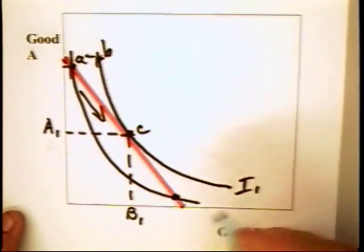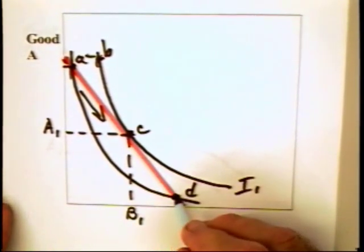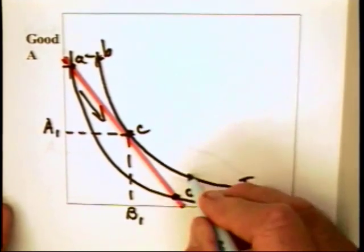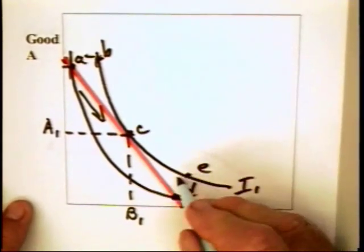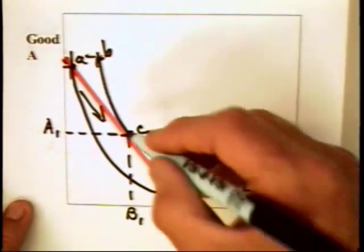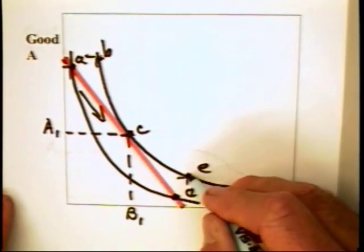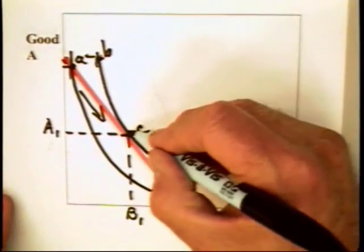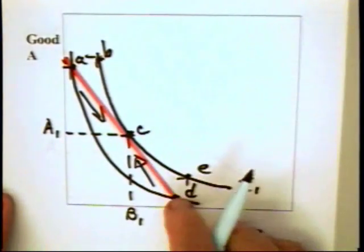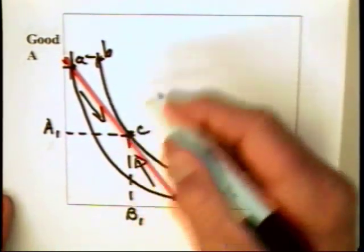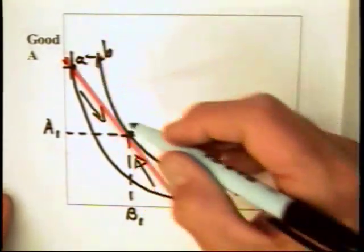We can take combination D and argue that if the individual were at D, there is some combination E that is of greater value than D. We know that C is on the same indifference curve as E, therefore C must be of greater value than D. The moral of the story is that the consumer is going to be in equilibrium where the indifference curve is tangent to the budget constraint.